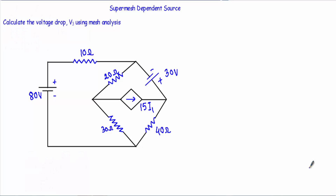In this video I will show you a circuit example in which we have to apply super mesh analysis. The circuit contains a dependent source. Between this mesh and this mesh I have a dependent current source I1, and this I1 is a current that is flowing through this 10 ohm resistor.